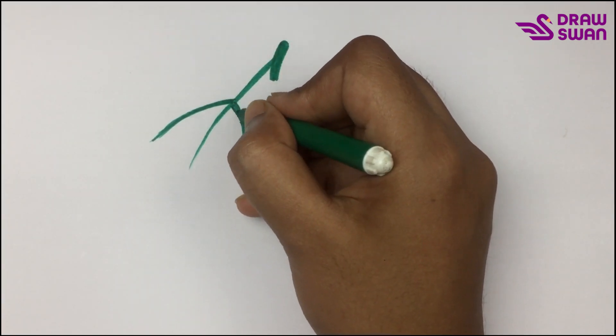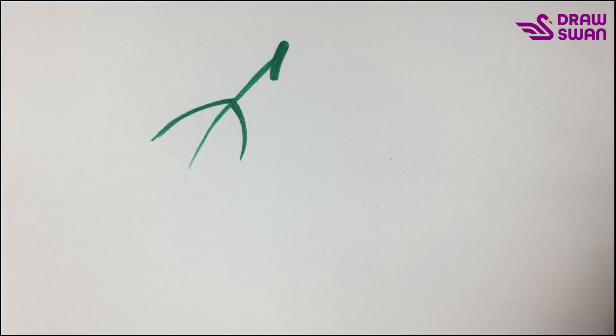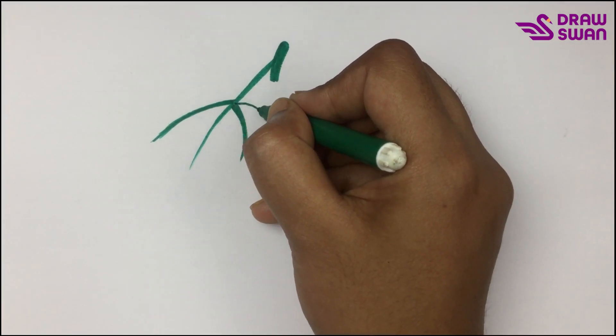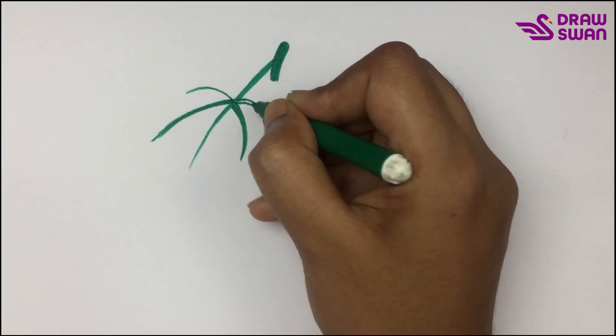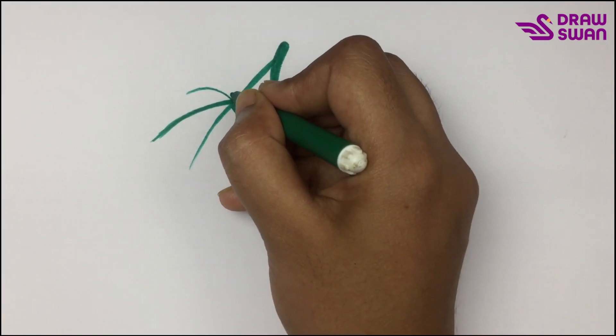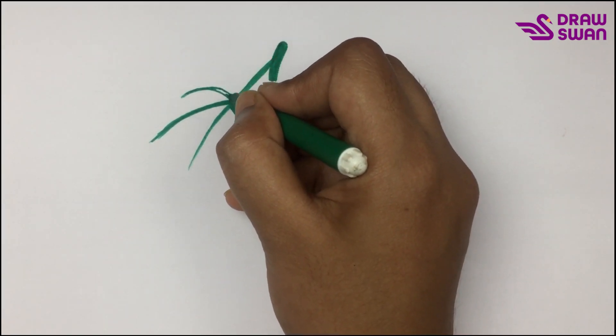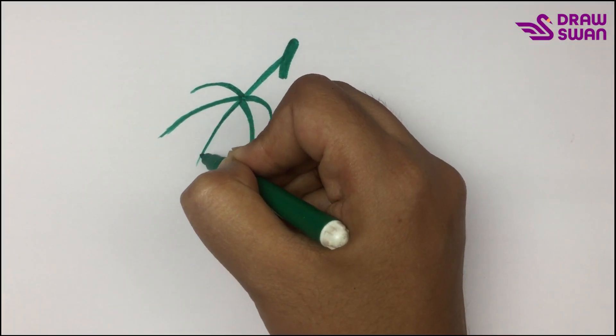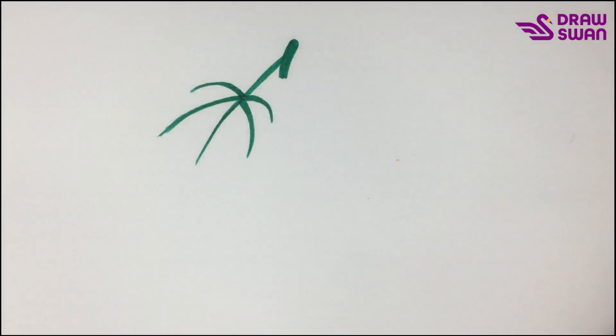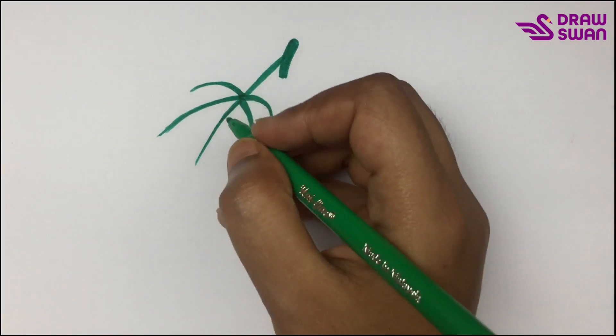...leaf. Here's its leaf vein. Now for the leaf, I'm using my light green pen.